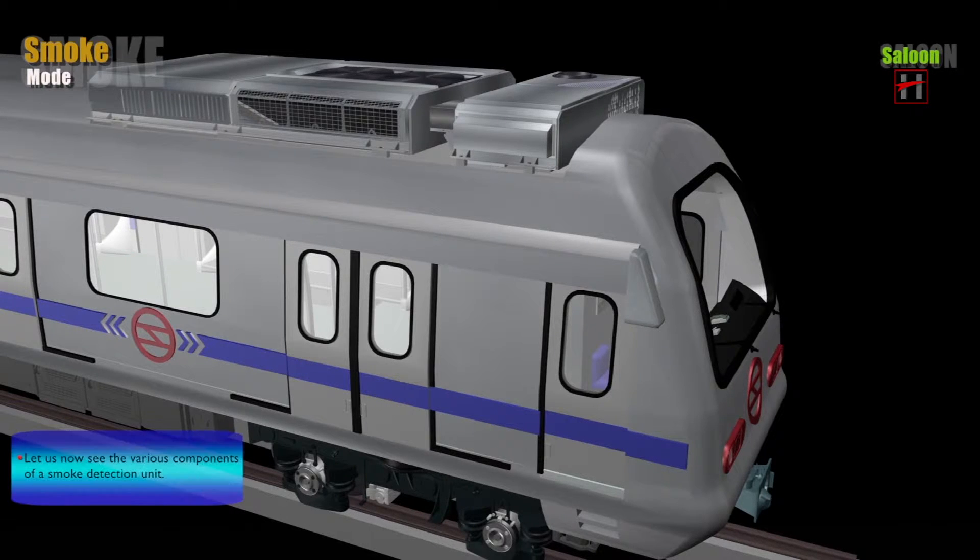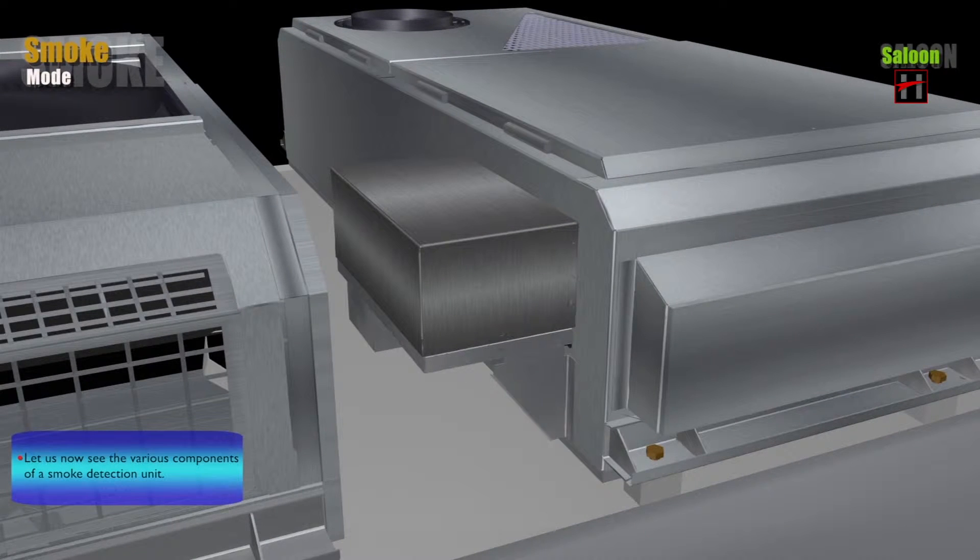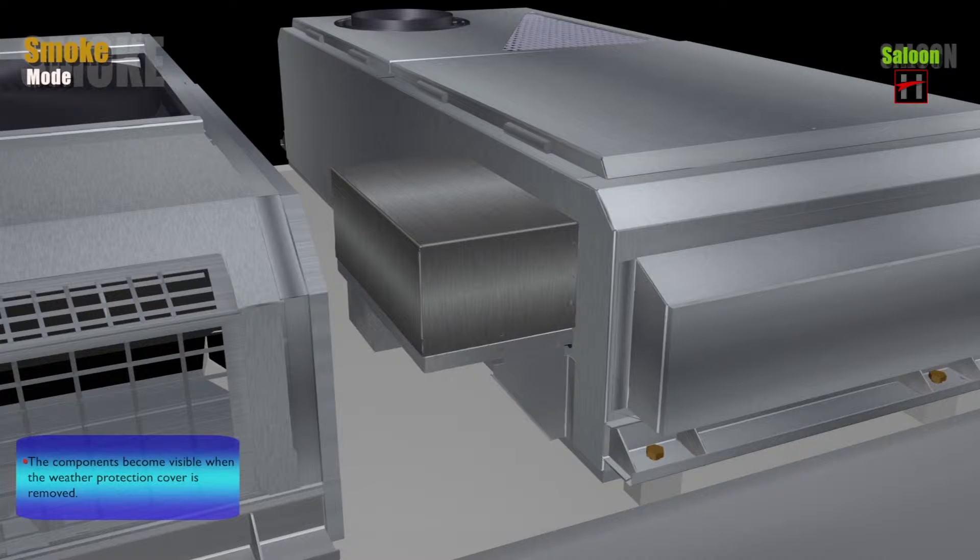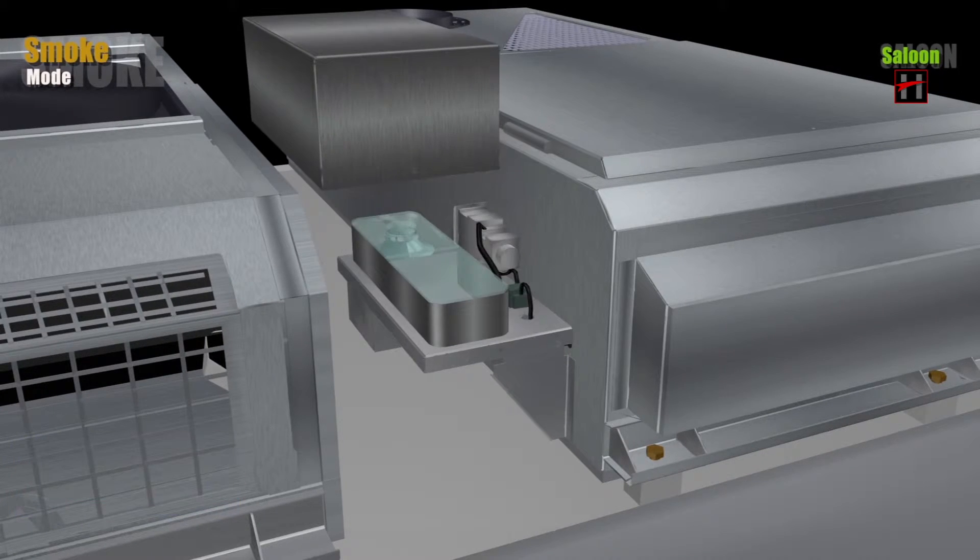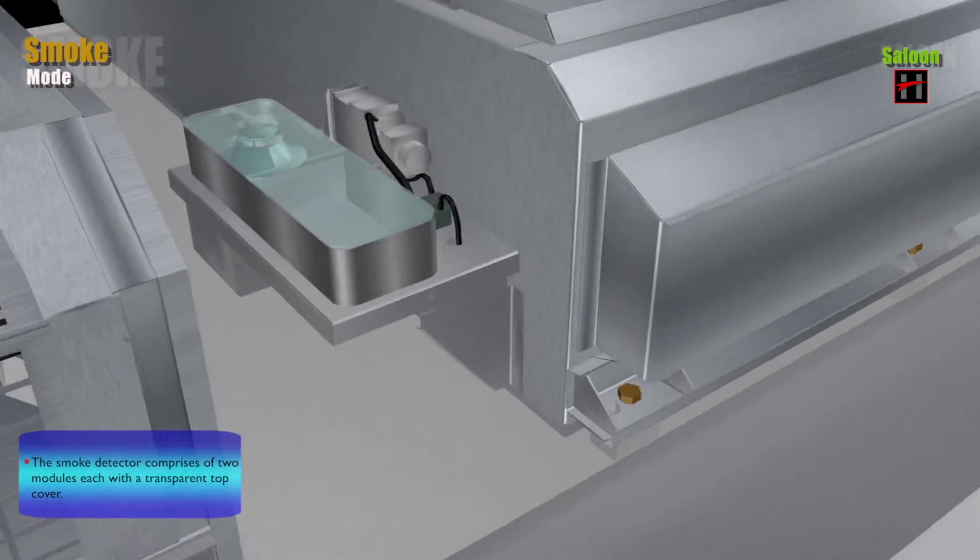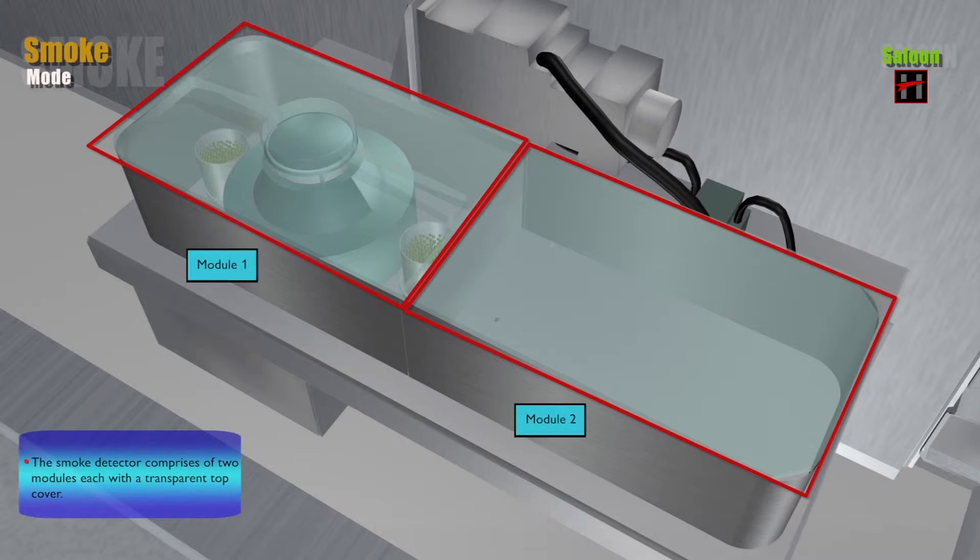Let us now see the various components of a smoke detector unit. The components become visible when the weather protection cover is removed. The smoke detector comprises of two modules, each with a transparent top cover.